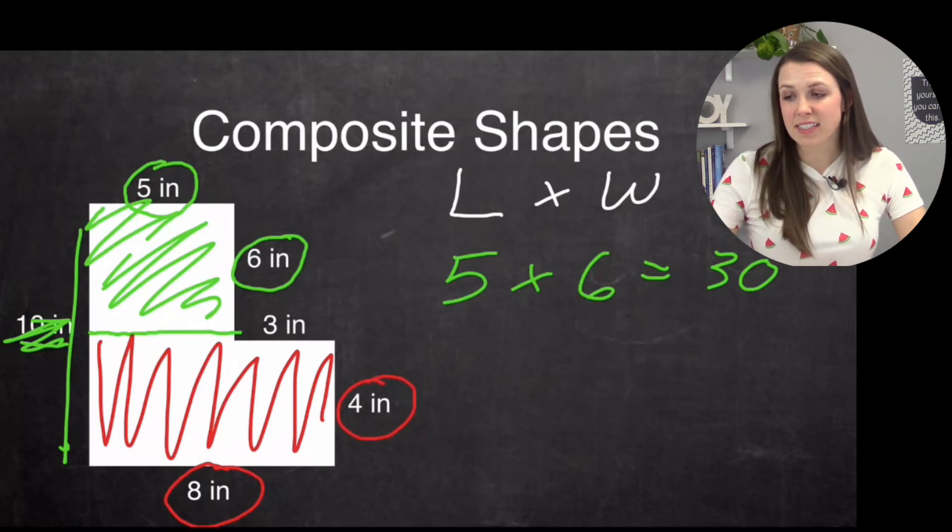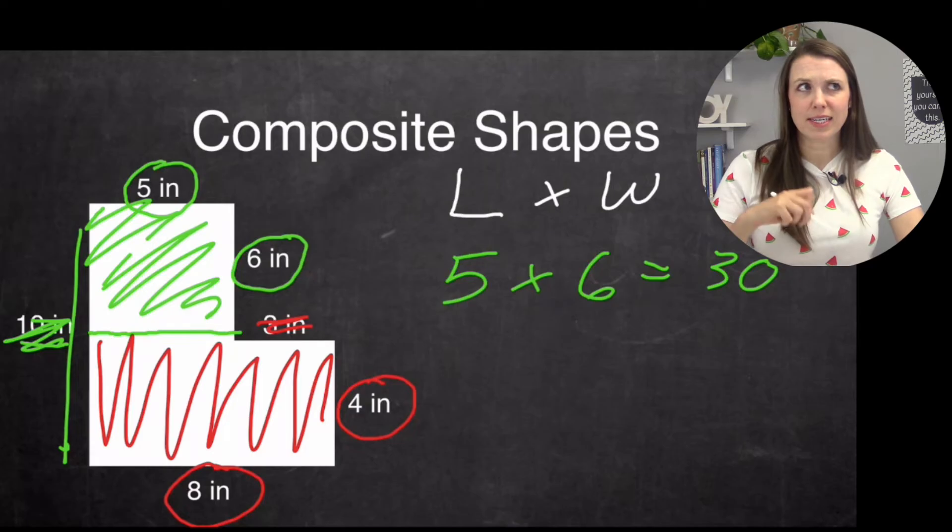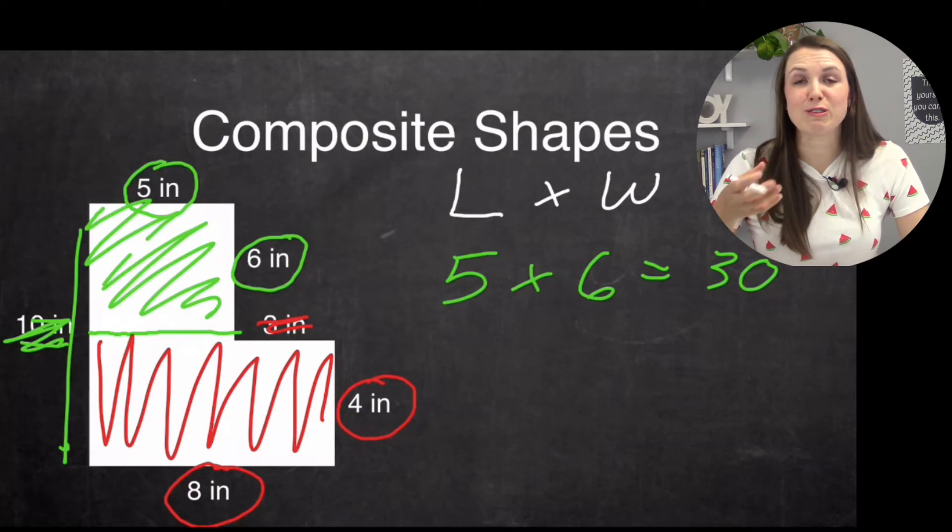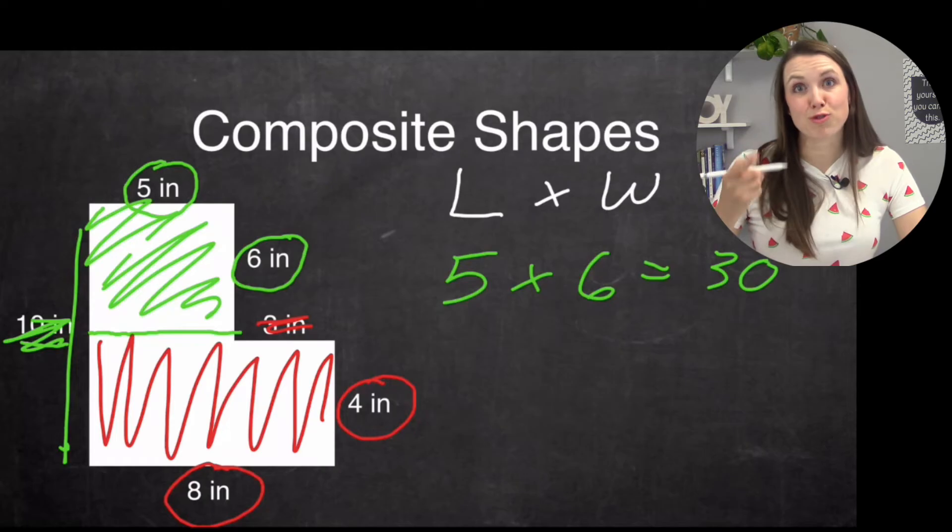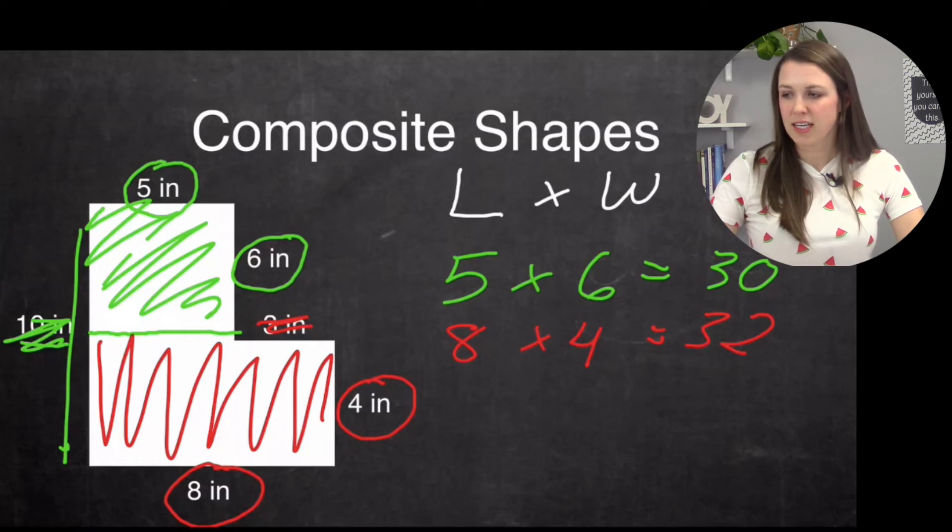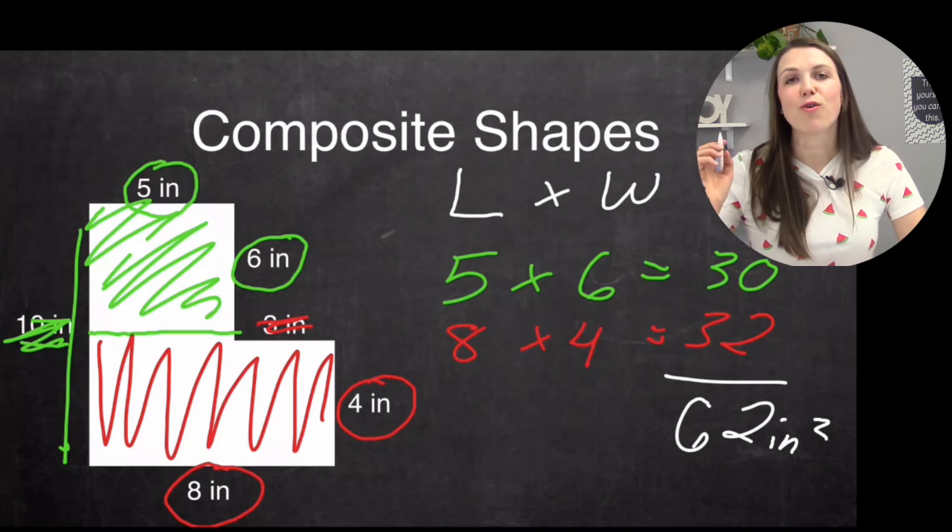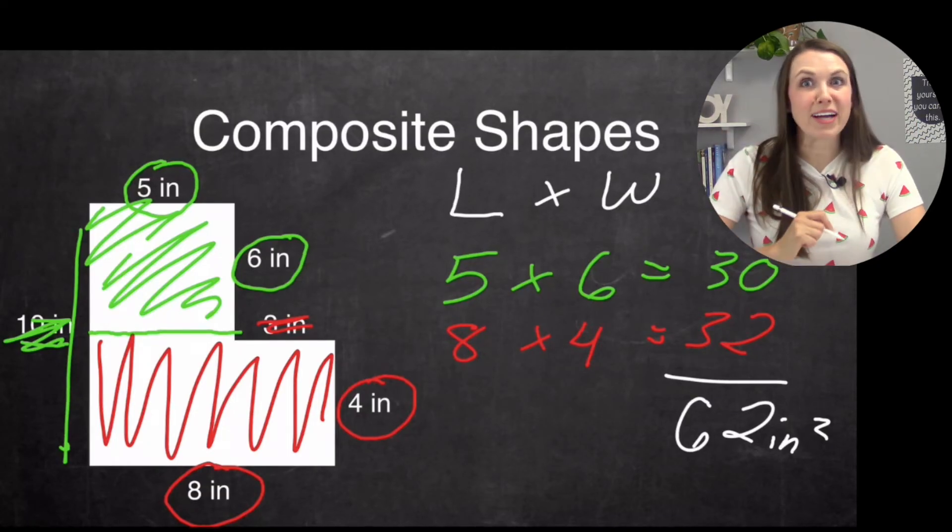And now we have our red. And so I have eight times four. And so again, this three, in this case, it doesn't really matter. So you want to make sure that you're looking at the correct numbers because a lot of times there might be extra numbers that you don't need. Sometimes you even actually have to subtract numbers. So just be mindful of that. So eight times four is 32. And so if I go 30 plus 32 is 62 inches squared. And that's what I got before, so my answer works the same way, no matter which way I do it. Let's practice another one.